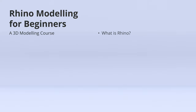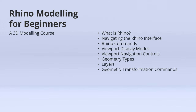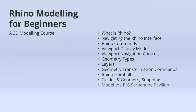I'll give an overview of the following: what Rhino 3D is; how to navigate the Rhino interface; Rhino commands, what they are and how to use them to design 3D objects; how to use the viewport display modes to change the way you view your model; viewport navigation controls; the different geometry types available in Rhino; layer control; tools that allow the transformation and manipulation of these geometries; the Rhino gumball; guides and geometry snapping. Then we will apply what we've covered to a precedent exercise where we will create a 3D model of architect Bjark Ingels' Serpentine Pavilion in Rhino.